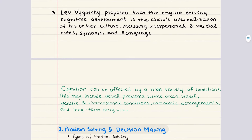The role of culture in cognitive development is equally important. Cognitive development is very much related to culture because one's culture determines what they're expected to learn. Some cultures place a higher value on social learning, including cultural traditions and roles, while others value knowledge. Culture also influences the rate of cognitive development because children are treated very differently across cultures. Lev Vygotsky, a prominent educational psychologist, proposed that the engine driving cognitive development is the child's internalization of their culture, including interpersonal and societal rules, symbols, and language.